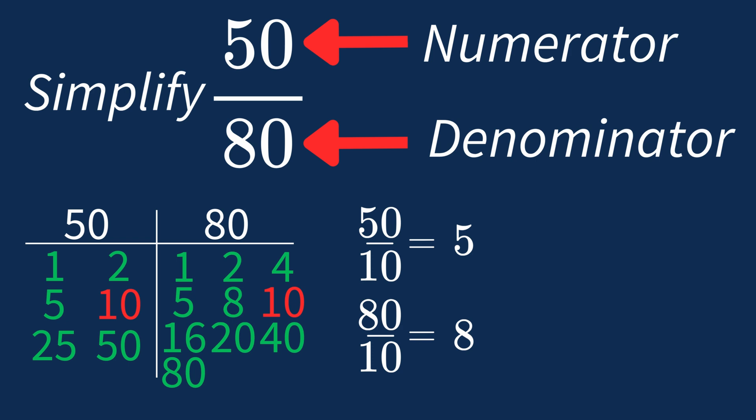So after dividing, the simplified fraction is 5 over 8. And we know that 5 over 8 is in its simplest form, because the only common factor between 5 and 8 is 1. And when 1 is the largest common factor, we know that our fraction has been simplified.